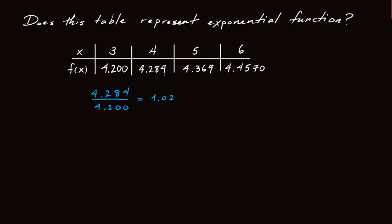What about the next pair? Well, we have to look at that pair, 4.369 divided by 4.284. That gives us the factor by which it grows from x equals 4 to x equals 5. And if we plug that in to a calculator,